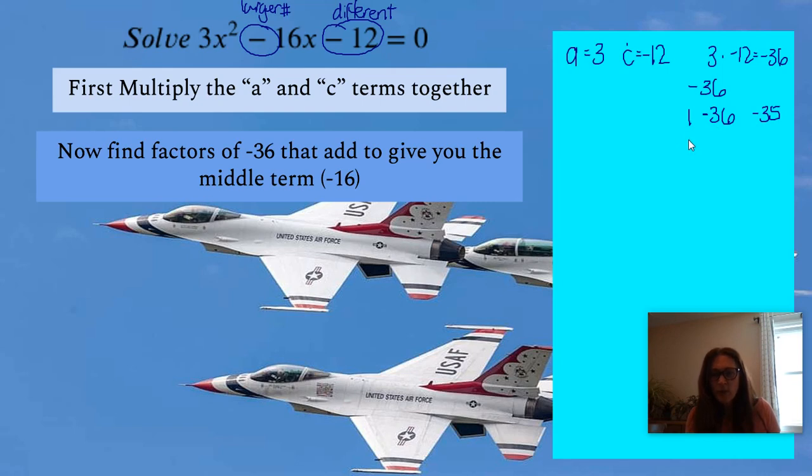So let's go on to the next one. So that would be 2 and negative 18, which would give me negative 16. And those are the numbers that we need.